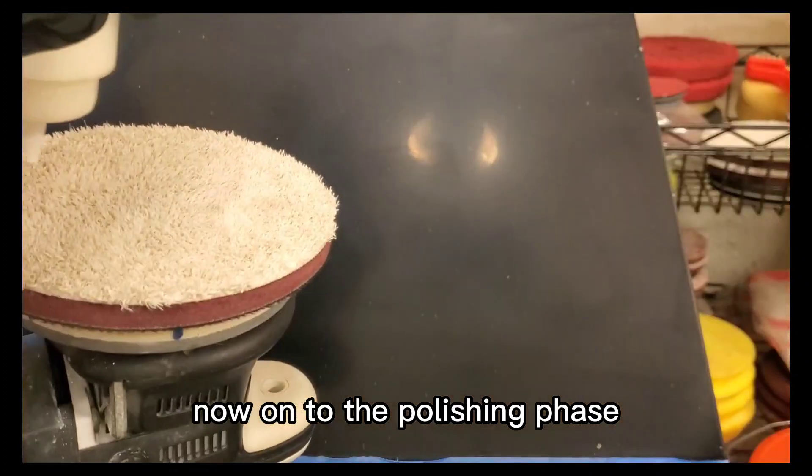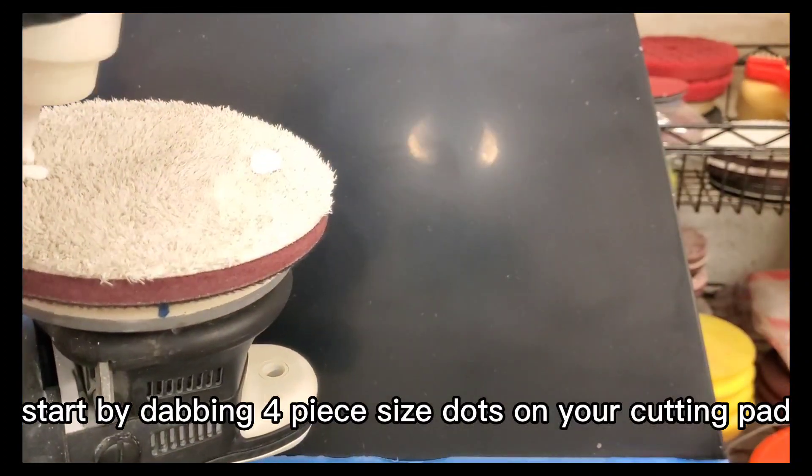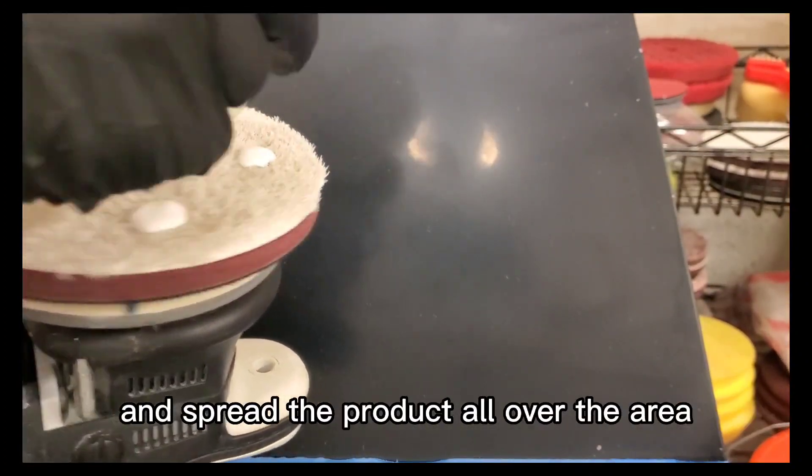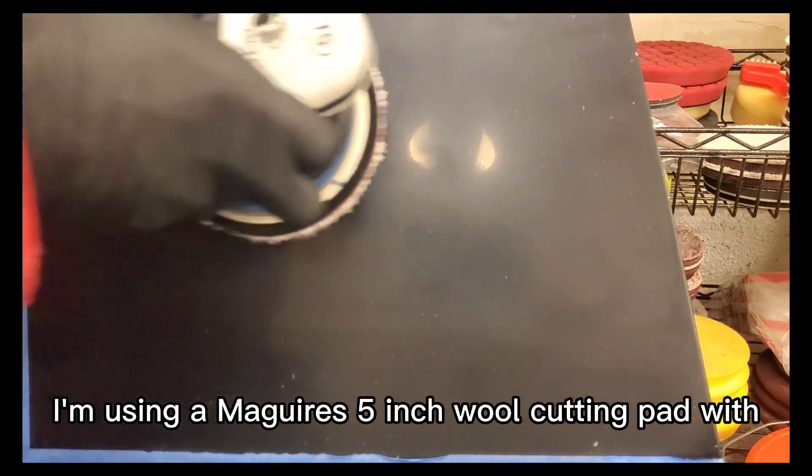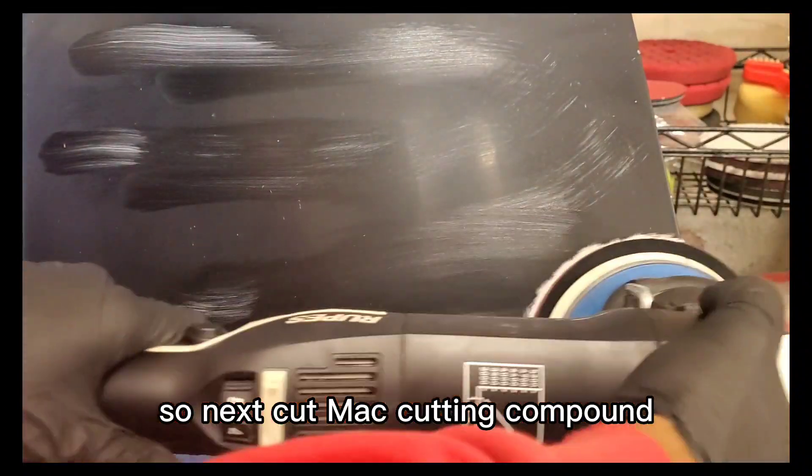Now on to the polishing phase. Start by dabbing four pea sized dots on your cutting pad and spread the product all over the area. In this video I'm using a Meguiar's five inch wool cutting pad with Sonax CutMax cutting compound.